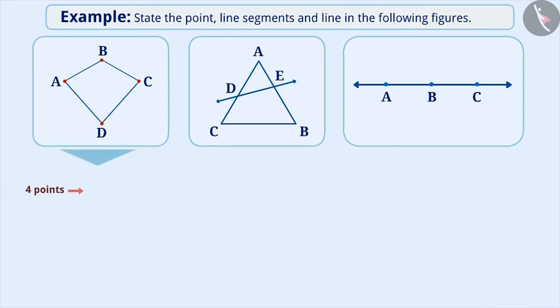The first figure has four points named point A, point B, point C and point D. Similarly, there are four line segments such as AB, BC, CD and DA. And there is no line in this figure.